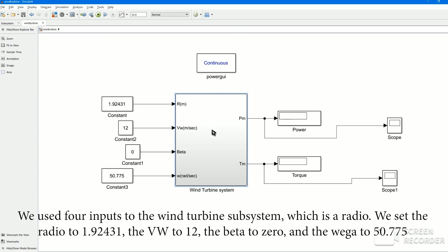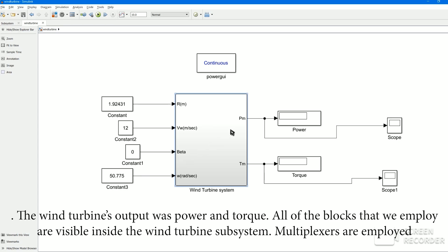We used four inputs to the wind turbine subsystem, which is a radio. We set the radio to 1.92431, the wind speed to 12, the beta to 0, and the omega to 50.775. For the wind turbine's output was power and torque. All of the blocks that we employ are visible inside the wind turbine subsystem.